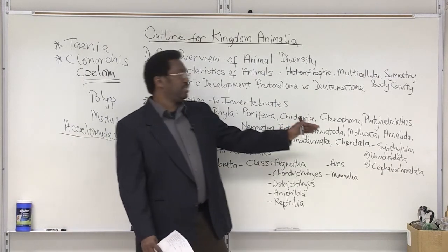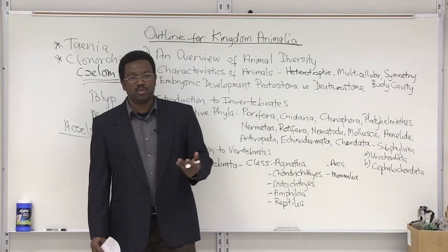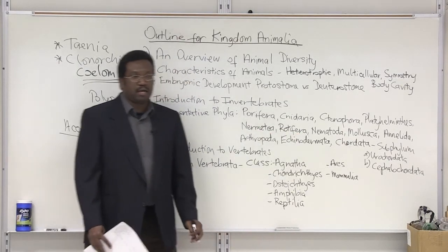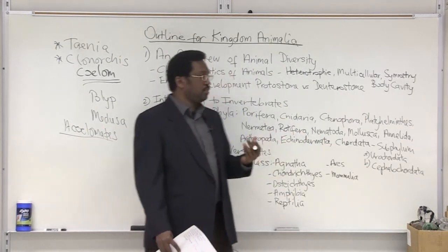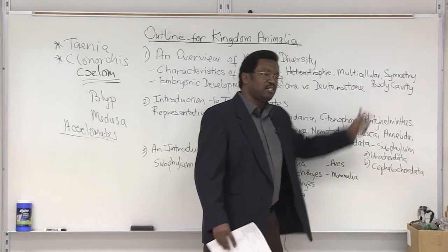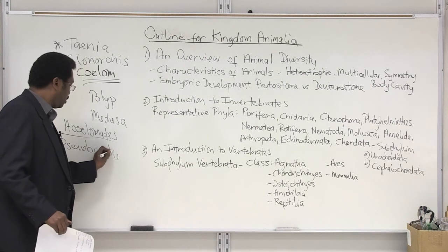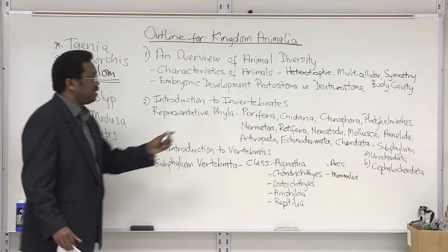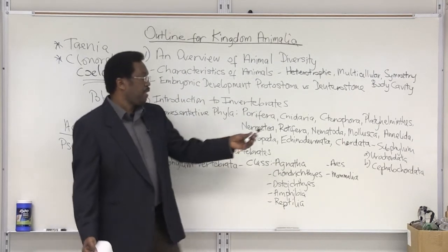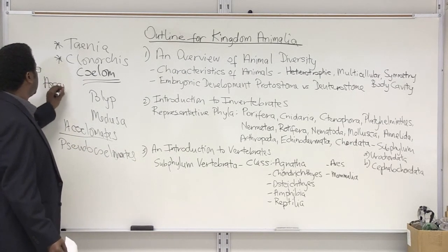Nematoda is another group similar to Platyhelminthes in having free-living forms but also parasitic versions. The nematodes are also used a lot in research, especially looking at embryonic development. These are known as the roundworms. Their body is more cylindrical, not flat in cross section. They do have sort of a body cavity, but it's not complete, and so they are referred to as pseudocoelomates — pseudo meaning false. The genus we look at in lab is Ascaris as an example of the roundworm.